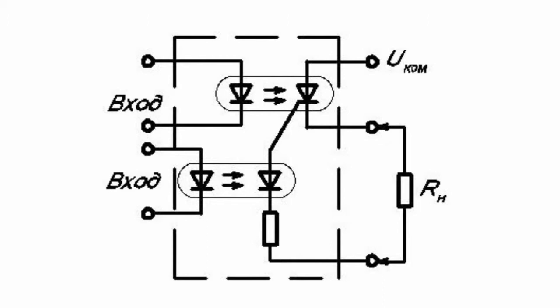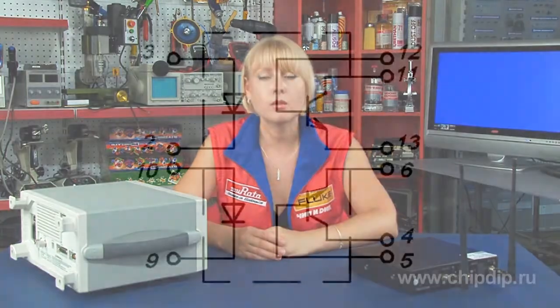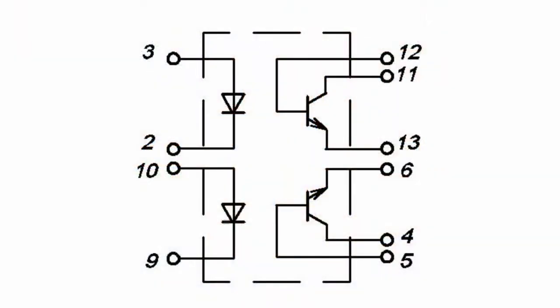The 249 series optoelectronic integrated circuits with four groups of devices are very interesting. The devices constitute electronic keys based on electroluminescent diodes and transistors.